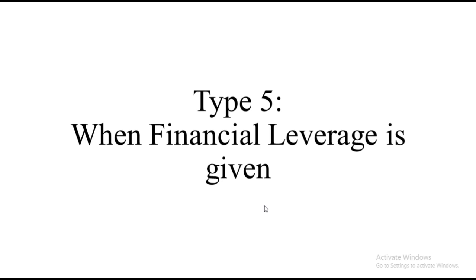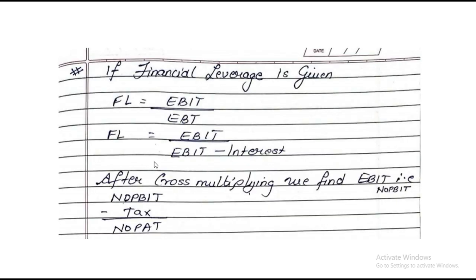The fifth and last type of sum under EVA is when financial leverage is given. The formula for financial leverage is: FL = EBIT / EBT, and EBT = EBIT − Interest. By cross-multiplying, we can find EBIT. EBIT is nothing but Net Operating Profit Before Interest and Tax. From there, subtract tax to get Net Operating Profit After Tax, then use the normal EVA formula.